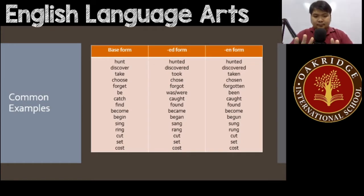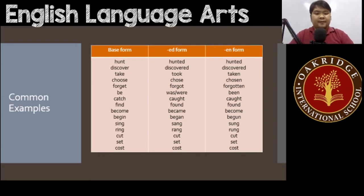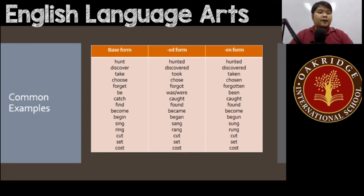In the first column we have the base form, the second column has the 'ed form,' and the 'en form' is in the last column. For example, hunt becomes hunted in the ed form and hunted in the en form — so for 'hunt' and 'discover,' the ed and en forms are actually the same.